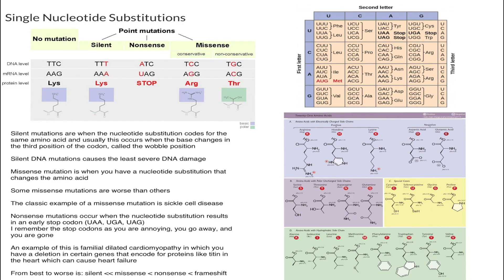Today we're going to talk about single nucleotide substitutions. Before we go further, let's briefly review what a codon is. A codon is a sequence of three DNA or RNA nucleotides that corresponds to a specific amino acid or a stop signal during protein synthesis.